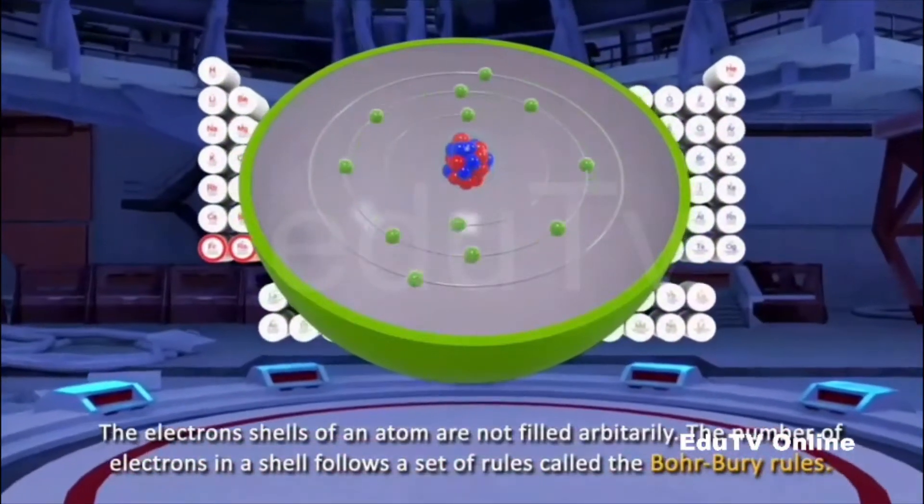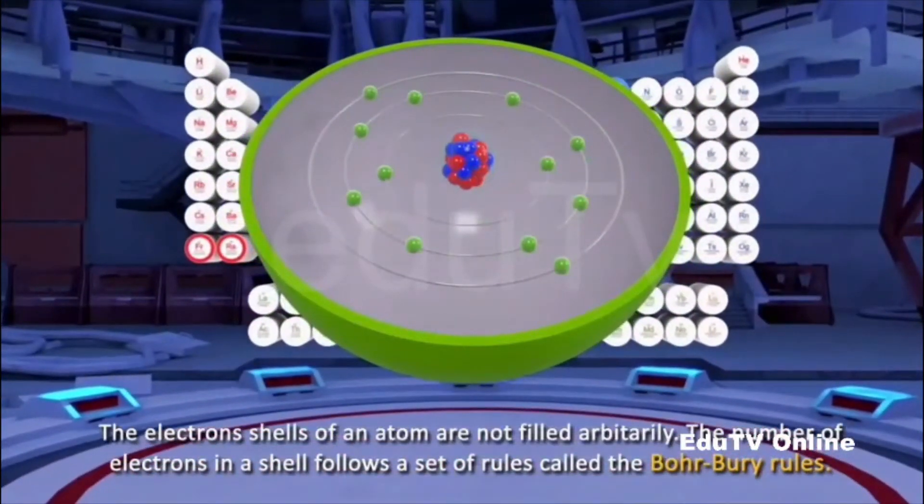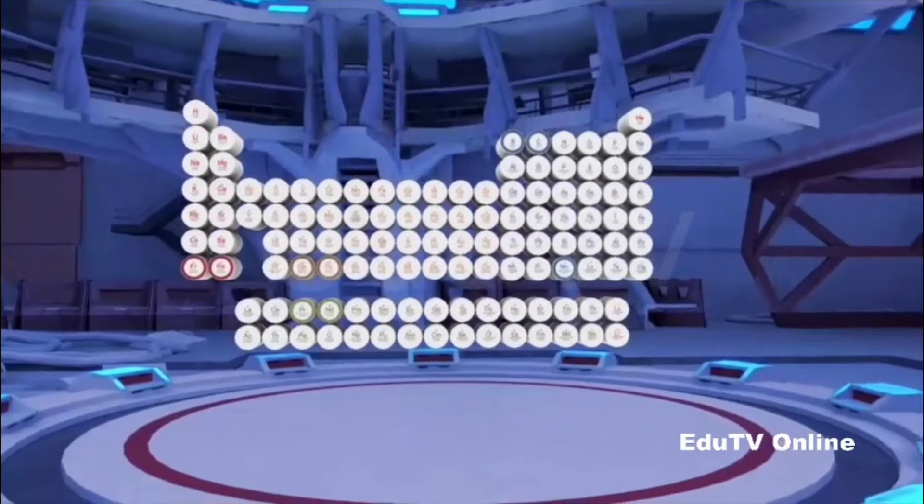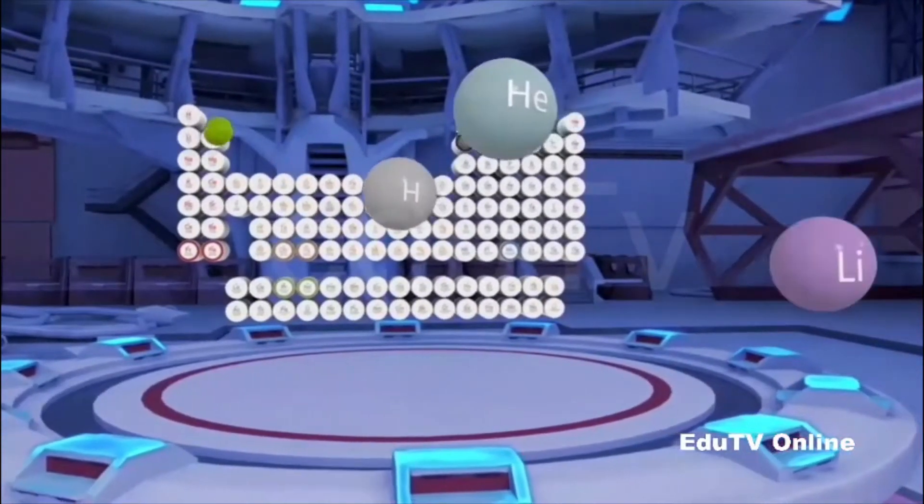We shall discuss Bohr-Bury rules that help us write the electronic configuration of elements up to calcium, whose atomic number is 20.